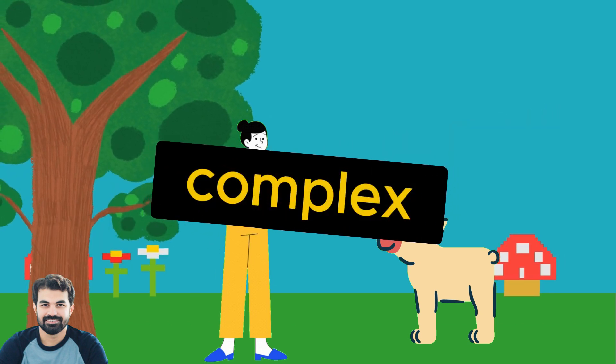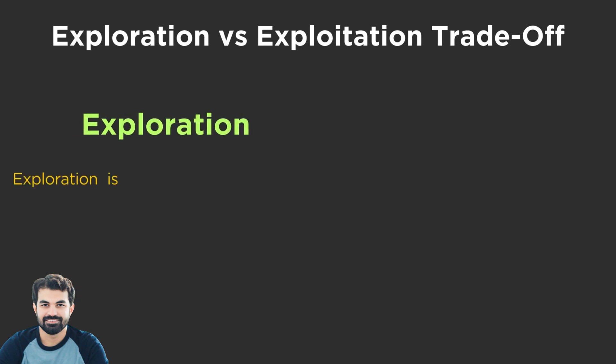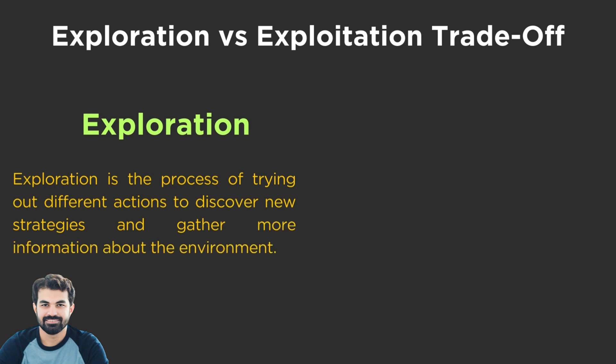For instance, the dog must find a balance between exploring new actions to see what works and exploiting what he already knows to maximize his rewards. This balance, known as the exploration-exploitation trade-off, is a critical concept in reinforcement learning.